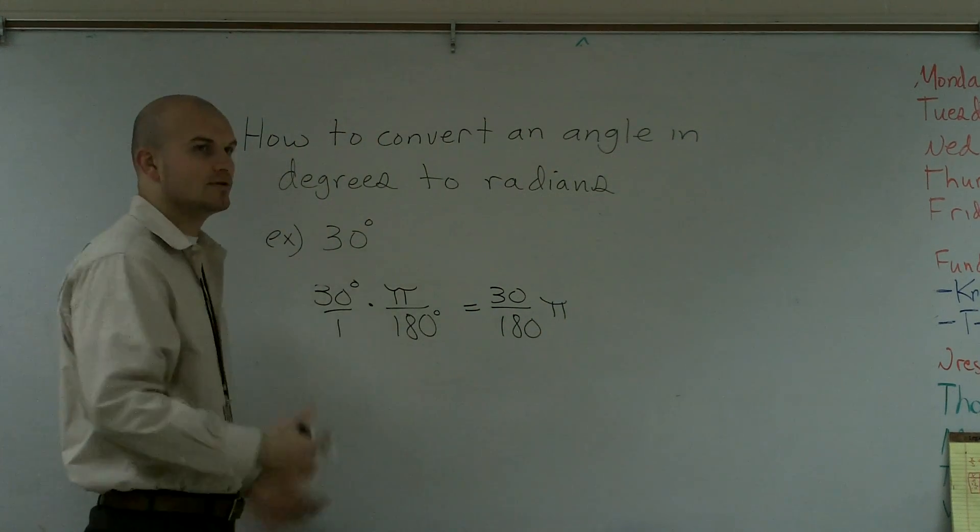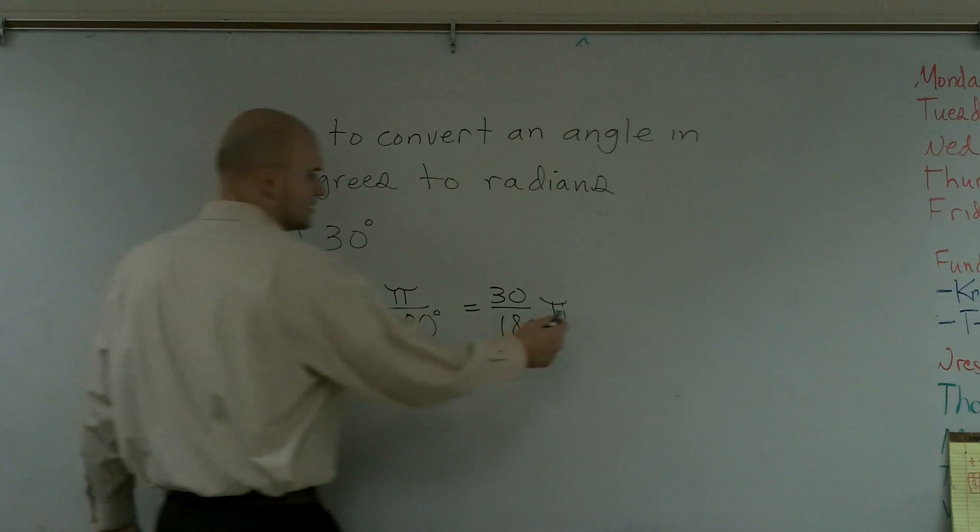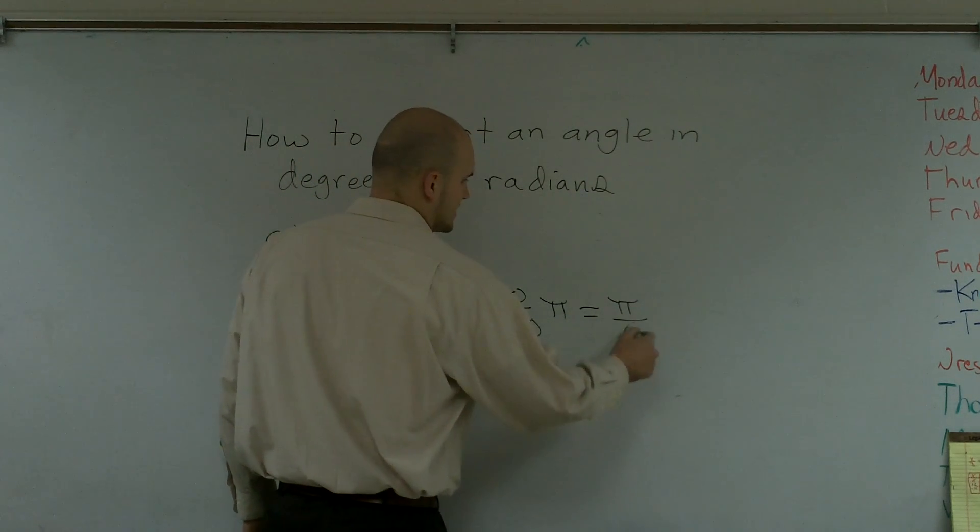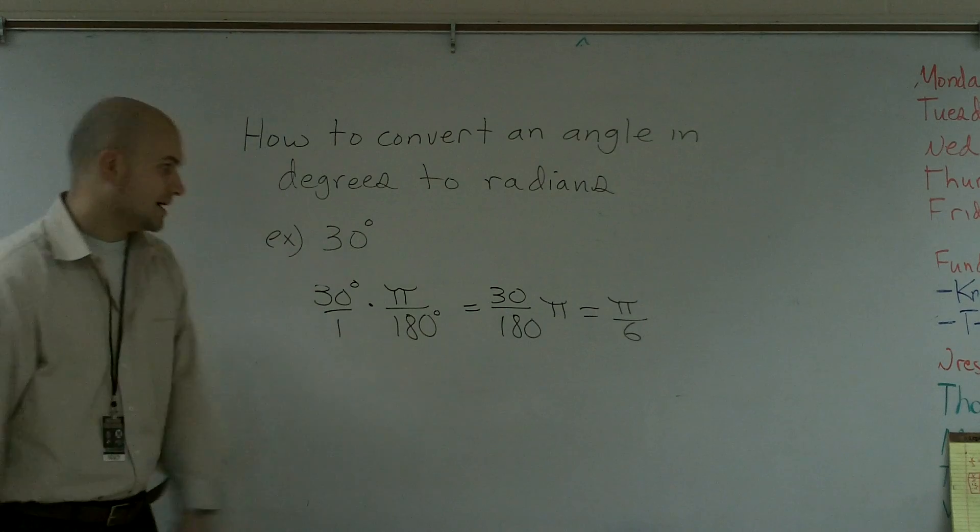30 over 180 converts down to 1 sixth, which can be easily written as pi over 6, or 1 sixth pi.